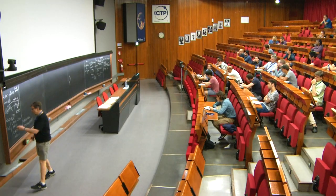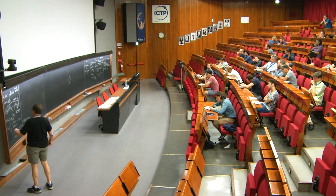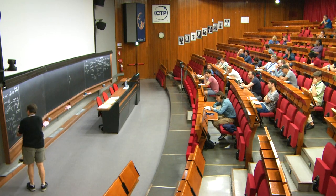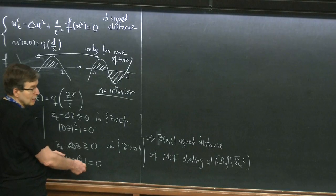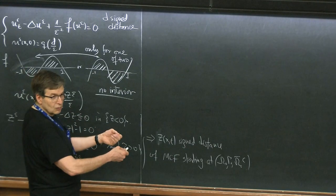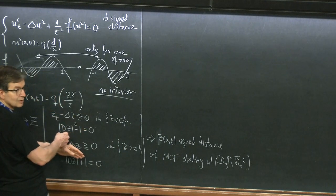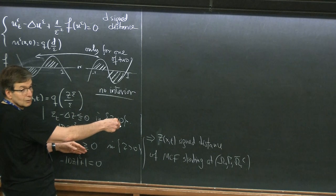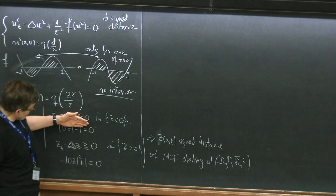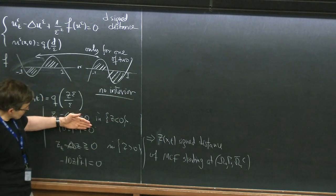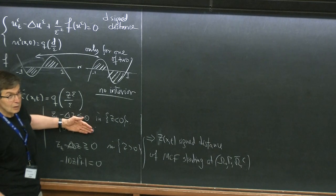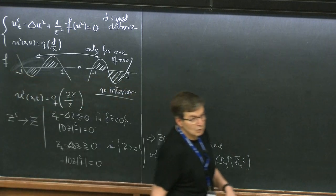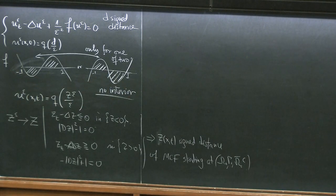Anytime I say something converges, this is what I have in mind. The lim sup of the z epsilons satisfies one condition, the lim inf satisfies the other, and in the background I have a theorem that says a function satisfying the first condition is below the distance function, and one satisfying the second is above it — but then they have to be the same. That's how I always do the convergence.